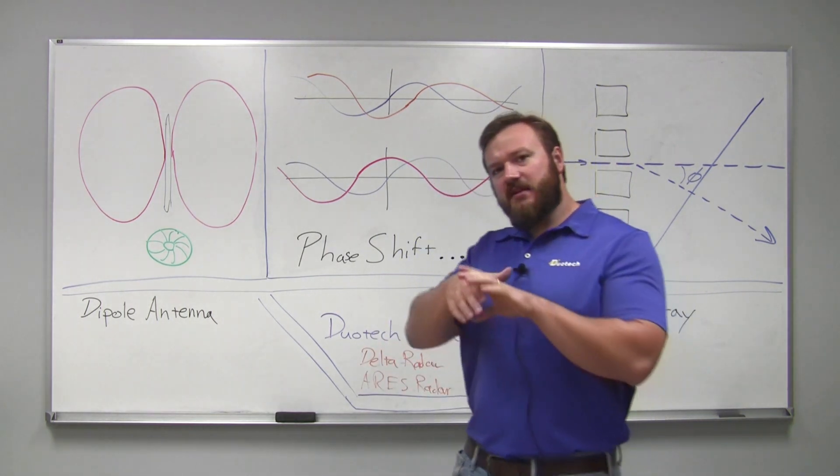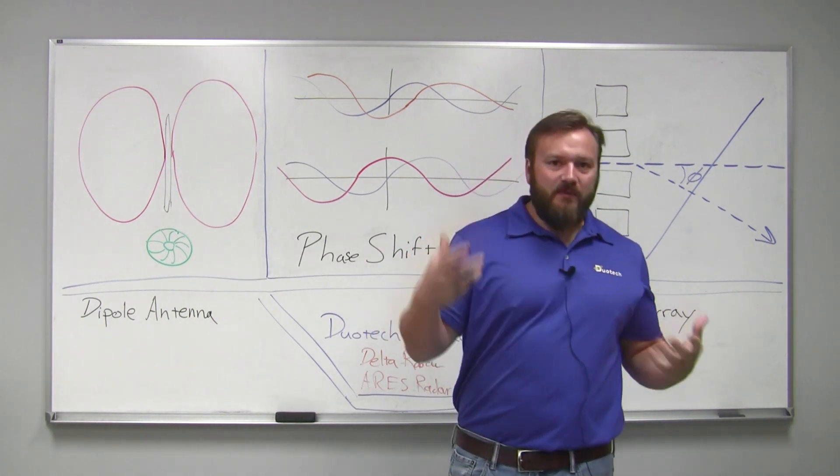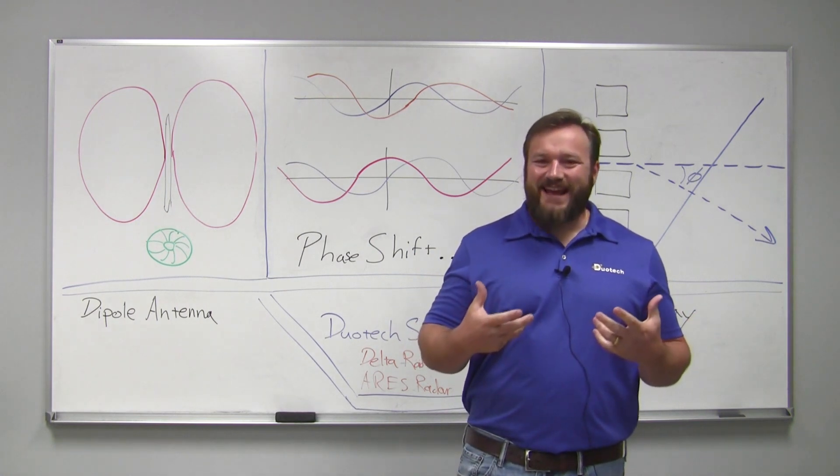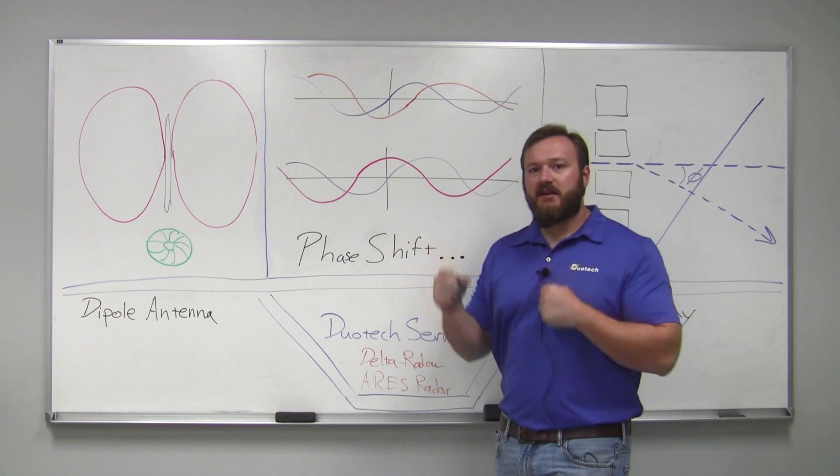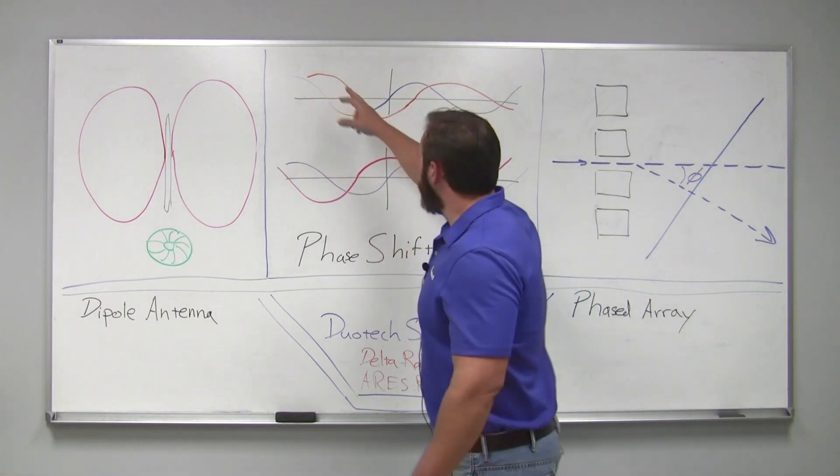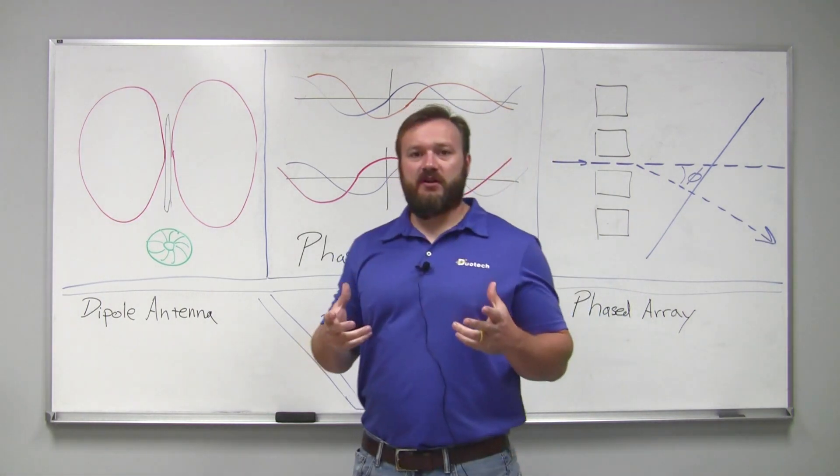When we talk about sending information down an antenna, what does that look like? Whether it's symbology or information, what's happening is we're sending a sinusoid down that antenna. A sinusoid being this sort of sine wave - cosine and sine are really just phase shifted versions of each other.